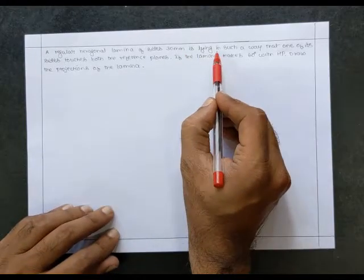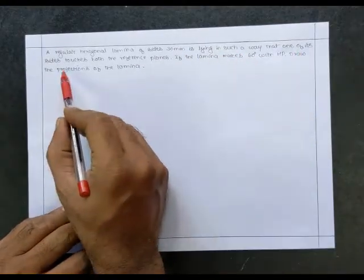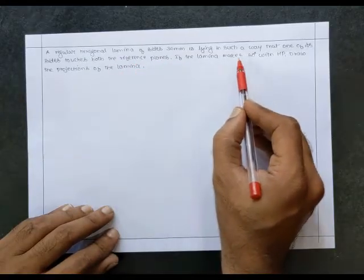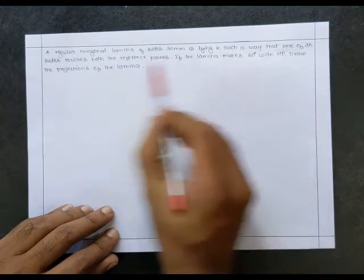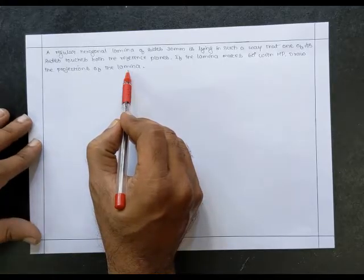Hello dear students, today we're going to solve one more problem on planes. The problem is: a regular hexagonal lamina of sides 30 millimeter is lying in such a way that one of its sides touches both the reference planes. If the lamina makes 60 degrees with HP, draw the projections of the lamina.